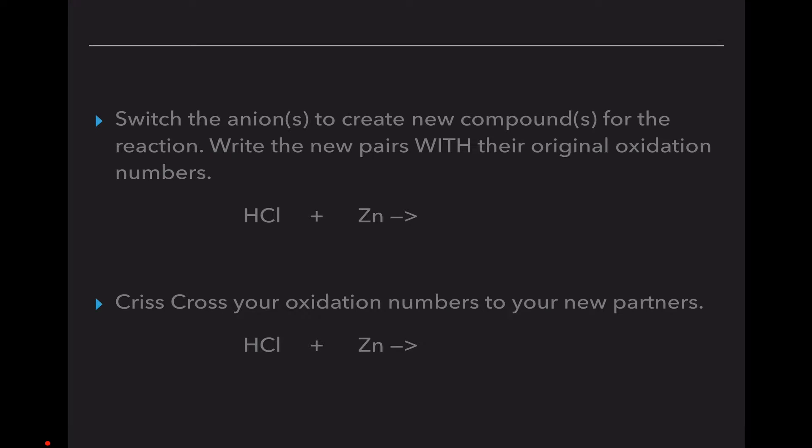Now we have to switch the anions to create the new compounds. Write the new pairs with their original oxidation numbers. So on the left we had H with a plus one, Cl with a minus one, and zinc with a plus two. So after the arrow I'm switching the anions, so zinc is going to get chlorine. So we have H with a plus one plus Zn with a plus two and Cl with a minus one.